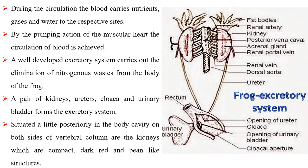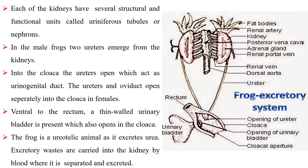A well-developed excretory system carries out the elimination of nitrogenous wastes from the body of the frog. A pair of kidneys, ureters, cloaca and urinary bladder form the excretory system. The kidneys are compact, dark red and bean-like structures situated posteriorly in the body cavity on both sides of the vertebral column. Each of the kidneys has several structural and functional units called uriniferous tubules or nephrons. In the male frog, two ureters emerge from the kidneys and open into the cloaca, acting as urinogenital ducts. The ureters and oviduct open separately into the cloaca in females. A thin-walled urinary bladder is present ventral to the rectum, which also opens into the cloaca. The frog is a ureotelic animal as it excretes urea. Excretory wastes are carried into the kidney by blood where they are separated and excreted.